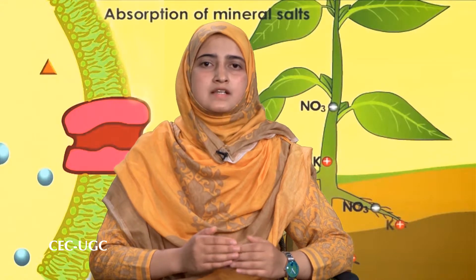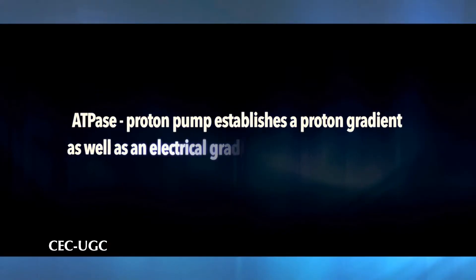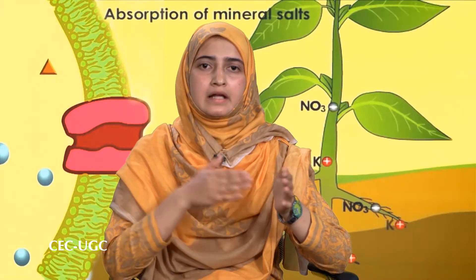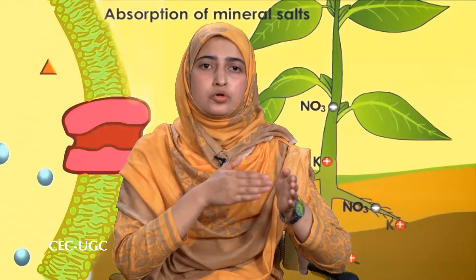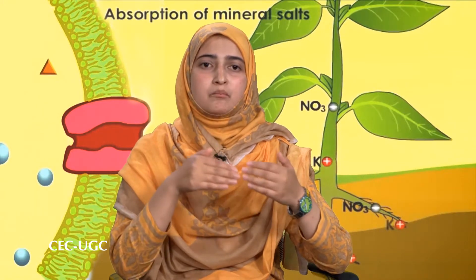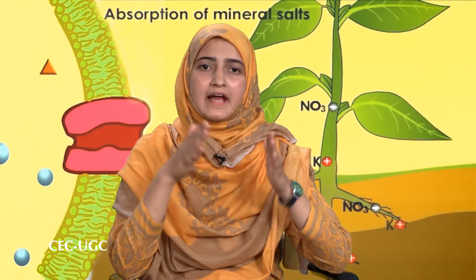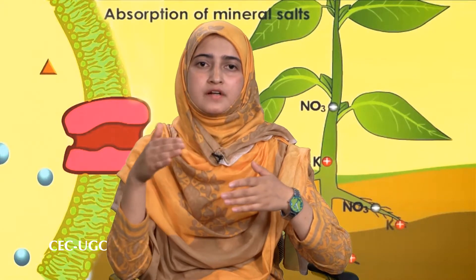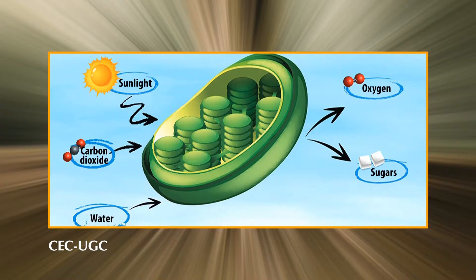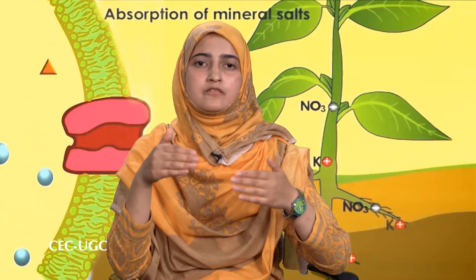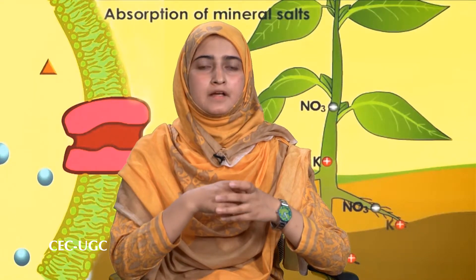Third, since the ions translocated are protons, the ATPase proton pump establishes both a proton gradient and an electrical gradient across the membrane. The energy stored in the resulting electrochemical proton gradient — the proton motive force — can then be coupled to cellular work in accordance with Mitchell's chemiosmotic hypothesis. This is an excellent demonstration of how chemiosmotic coupling is not restricted to ATP synthesis in chloroplasts and mitochondria, but can be used to perform other kinds of work elsewhere in the cell.